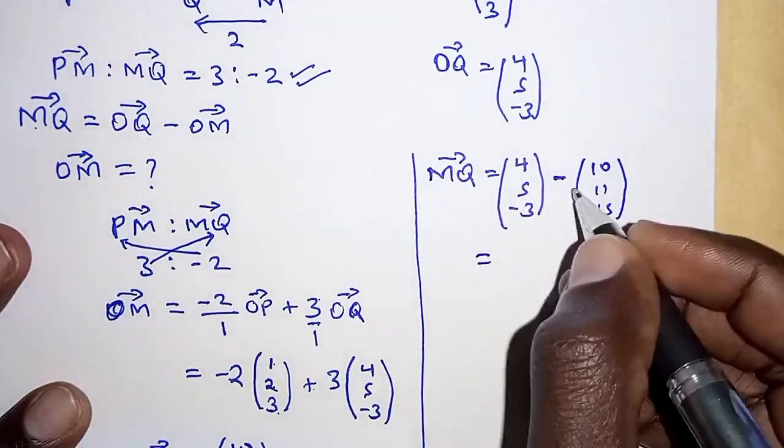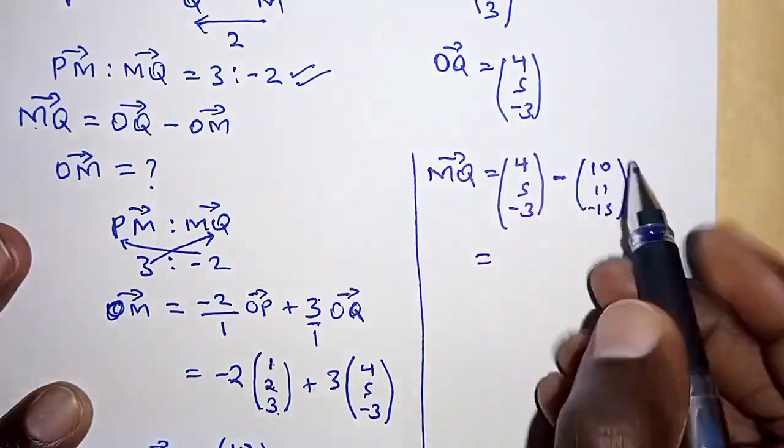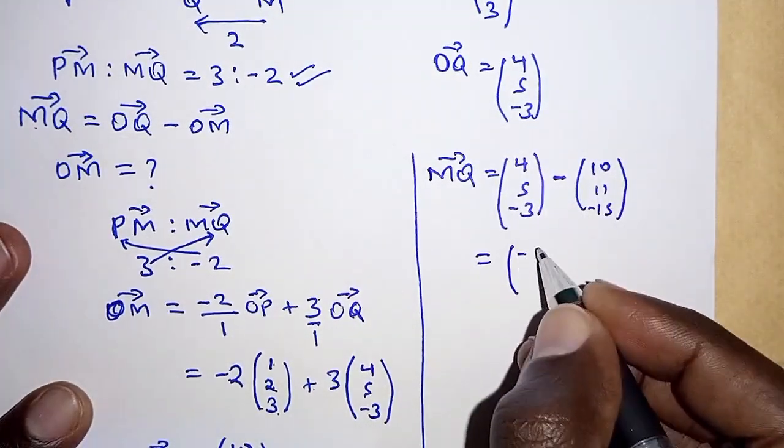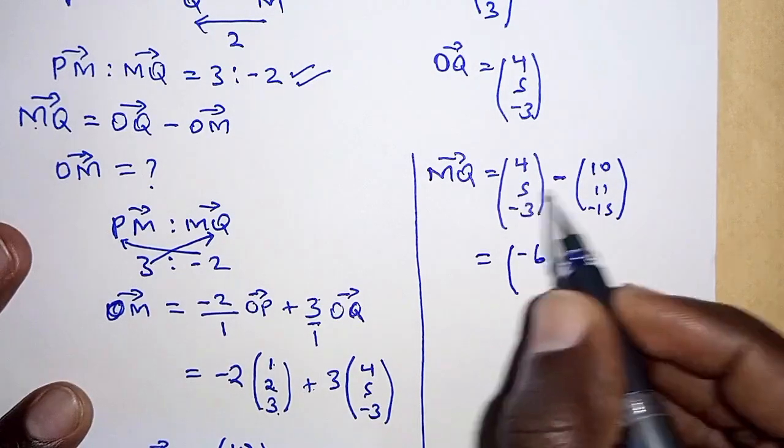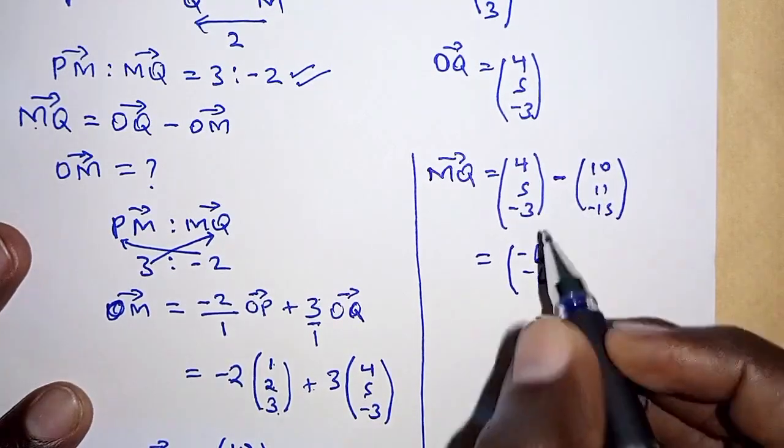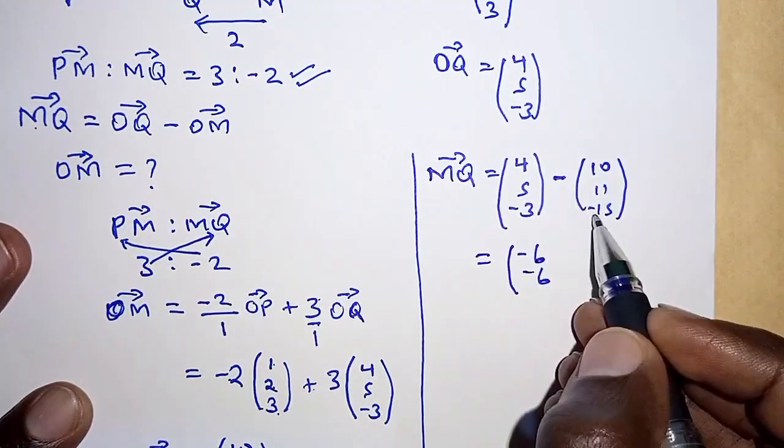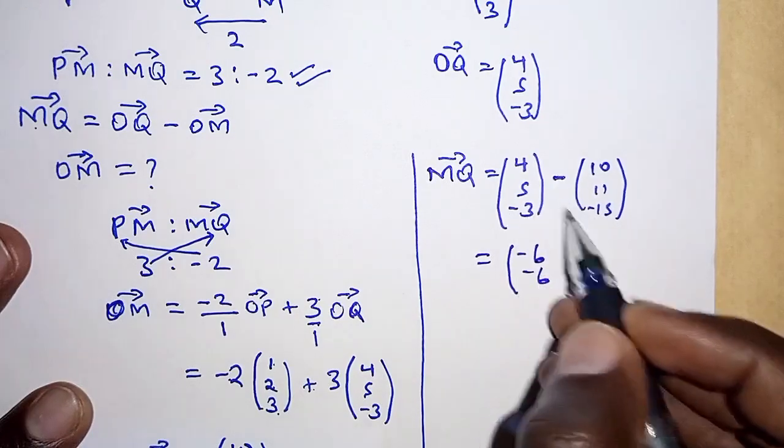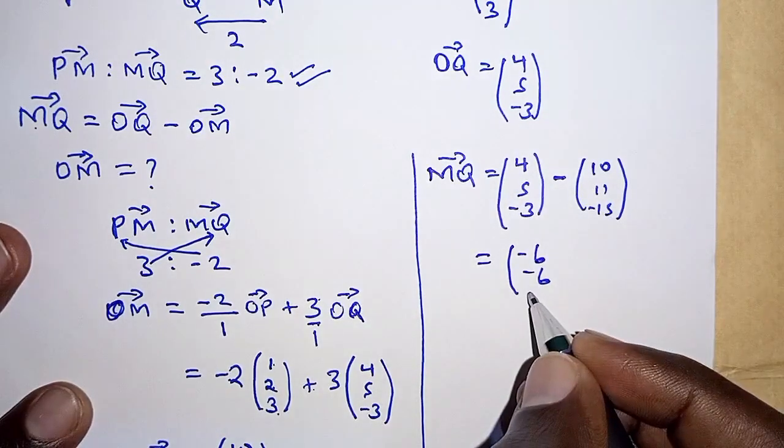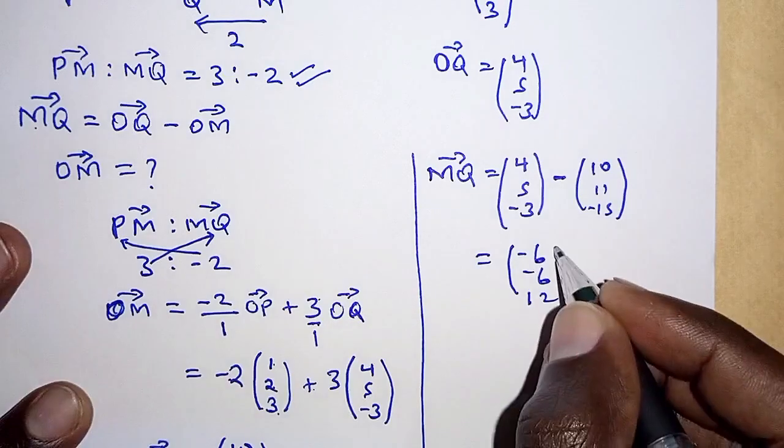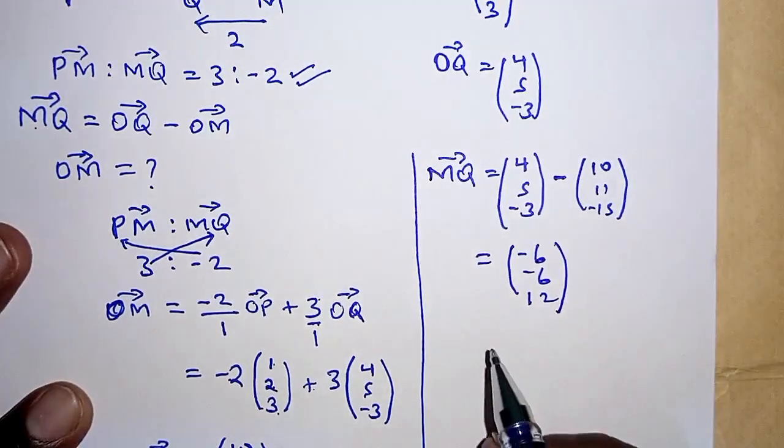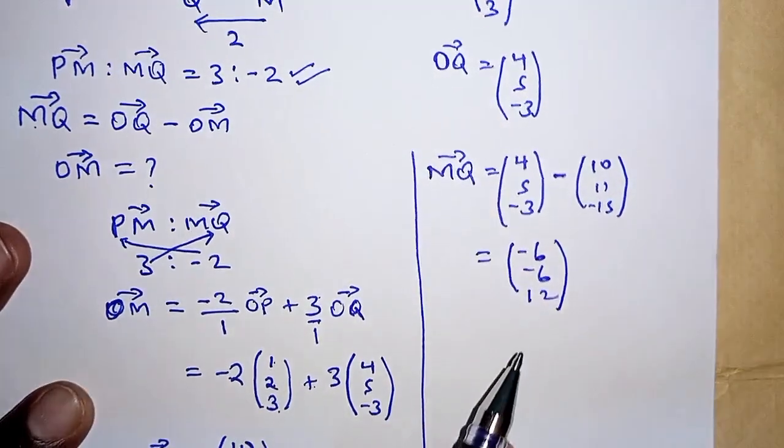If we work out this we should be getting 4 minus 10, that is negative 6; 5 minus 11, negative 6, negative 6 again; negative 3 minus negative 15, that is negative 3 plus 15, 15 minus 3 is 12. And that is vector MQ.